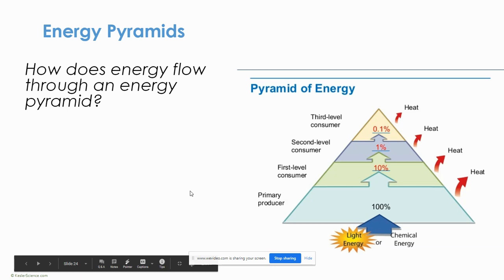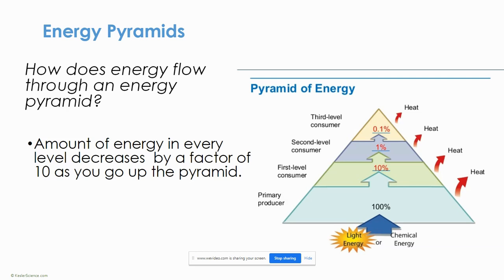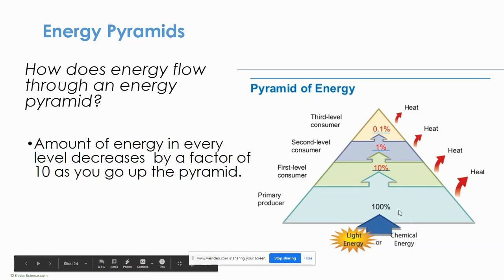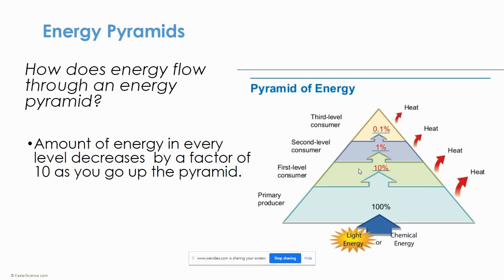How does energy flow in an energy pyramid? The amount of energy at every level decreases by a factor of 10 as you go up the pyramid. Producers have 100% of their energy from sunlight. Primary consumers can get only 10% of the energy from producers. At the second level it's only 1%, and at the third level just 0.1%. Most of the energy is used up and released as heat at every level as you go up.